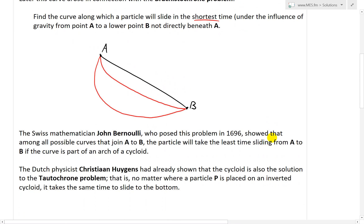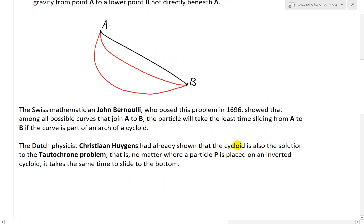And now in this problem, it turned out that the Swiss mathematician John Bernoulli, who posed this problem in 1696, showed that among all possible curves that join A to B, the particle will take the least time sliding from A to B if the curve is part of an arch of a cycloid. So if we were to draw a cycloid shape, it might look something like this. Just to give you an illustration. So this would be the cycloid, which is quite fascinating.